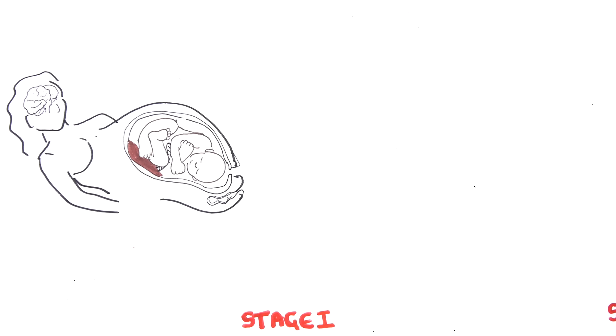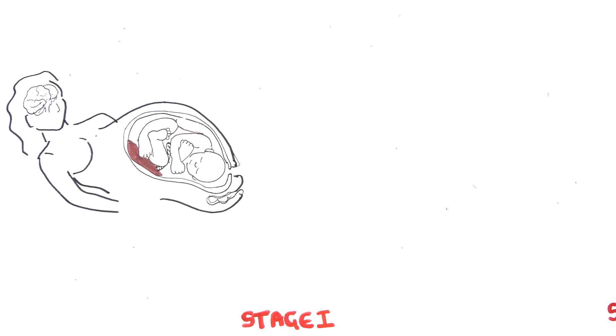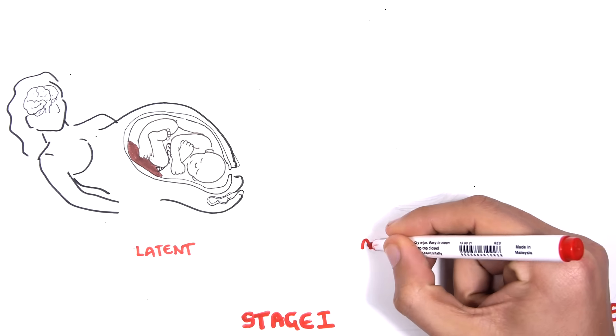Stage 1 of labor can be divided into two phases: the latent, also known as the initial phase, and the active phase.